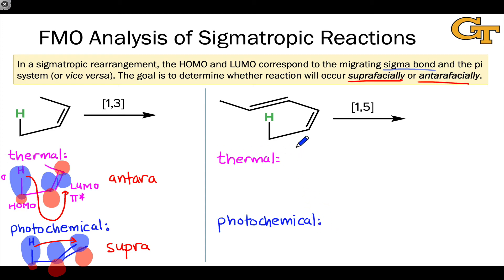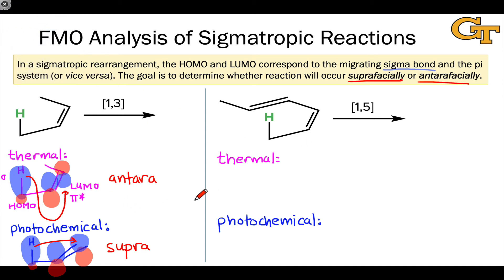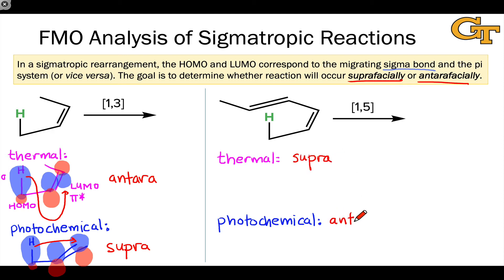In the thermal case we're looking at HOMO-LUMO overlap, and in the photochemical case HOMO-HOMO or LUMO-LUMO overlap — and we must get the same conclusion in either approach. The conclusion is analogous to the cycloaddition case: the selectivity switches for 1,3 versus 1,5. The thermal 1,5-rearrangement is superfacial, and the photochemical rearrangement is antarafacial. The photochemical reactions again have complementary selectivity to the thermal reactions.